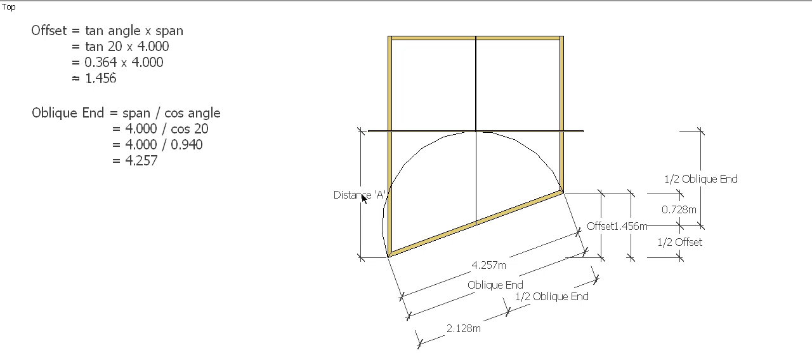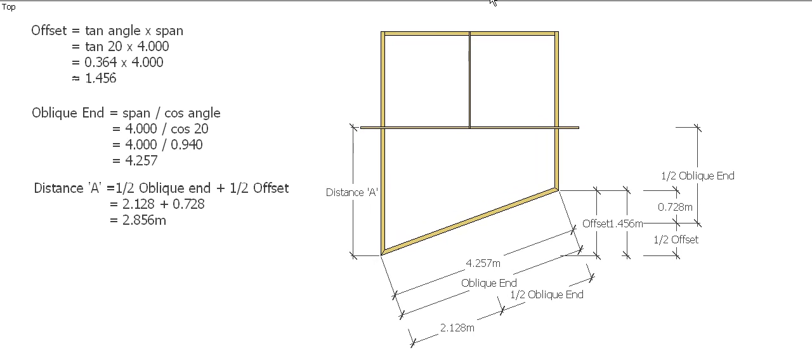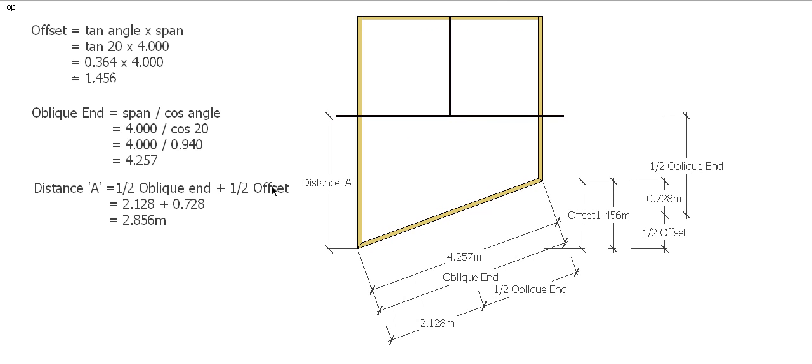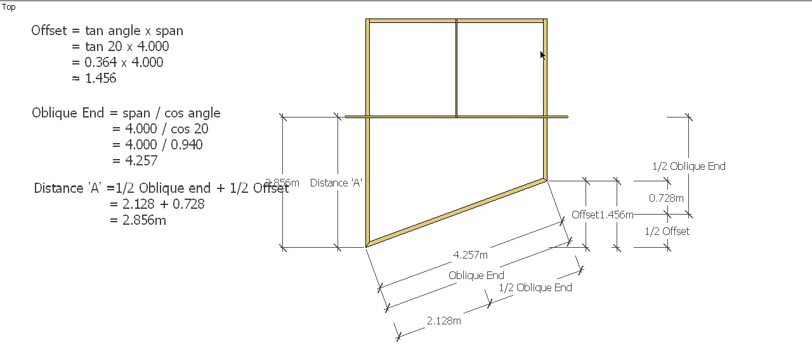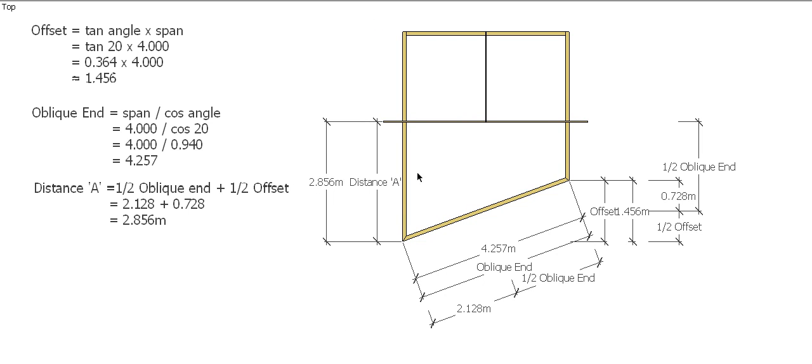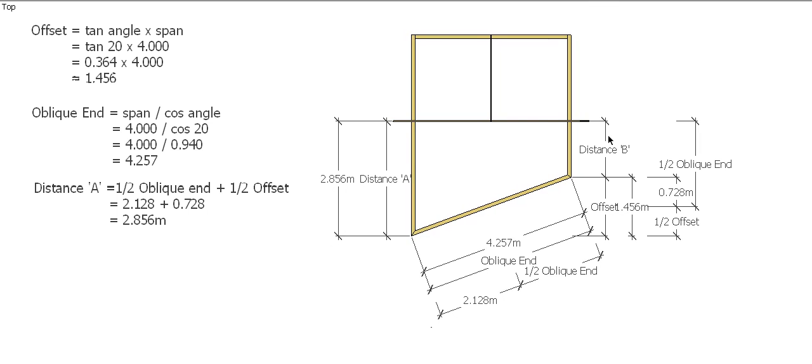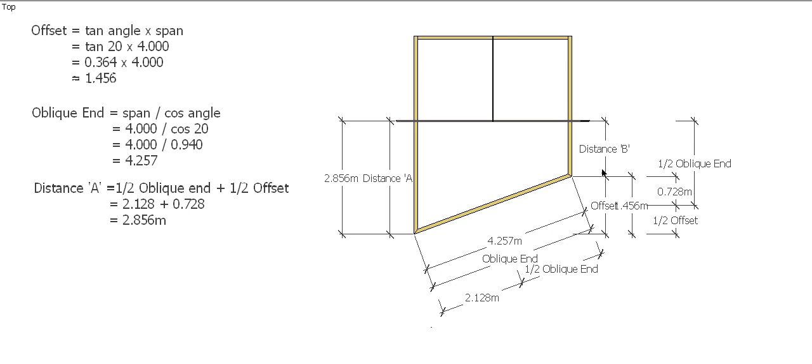To work out distance A, we need to know what half our oblique end is and then we need to add half our offset. So the formula for distance A is half oblique end plus half offset. So in this case 2.128 plus 0.728 gives us a distance of 2.856 for distance A. So now we know that we can just simply measure that along the plate, mark our center mark, and we've got our rafter positions. Now we need to do the same over here and get what we're going to call distance B.